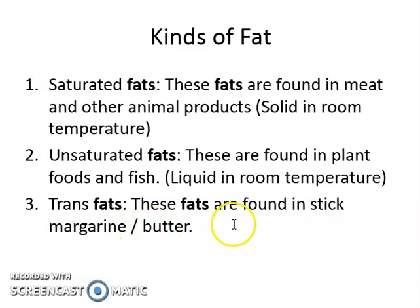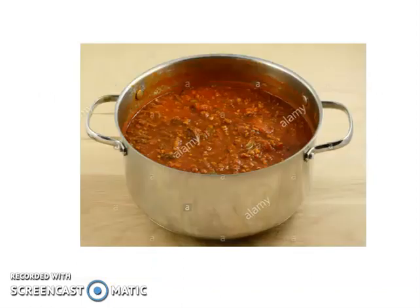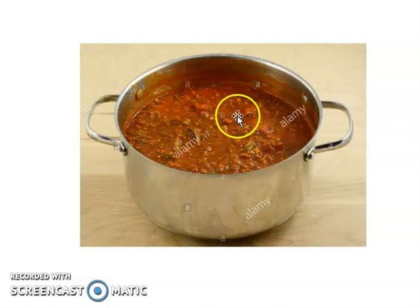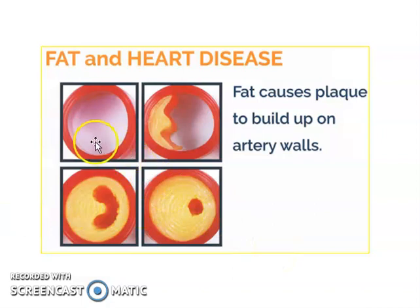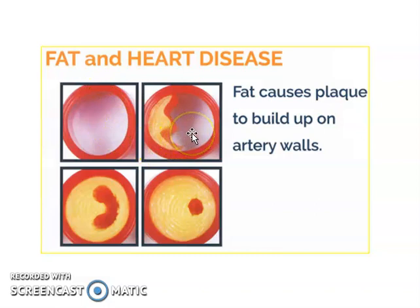Trans fat is fat found in greasy margarine and butter. Where can you find it? Remember, girls, when your mom is cooking pasta and she uses butter for sautéing, you will find a greasy wax coating when the pasta cools down. That thing is called trans fat. And when you consume a lot of trans fat, it can cause heart diseases. This is a normal artery of our heart — inside the heart there is a tube we call an artery. As you continually eat trans fatty food like buttery pasta, fat will build up.